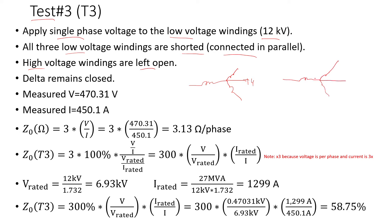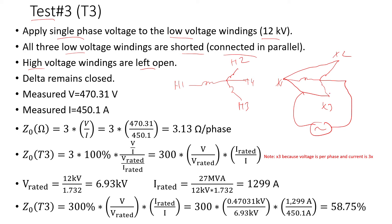This is the high side and this is the low side. I can label the bushings H1, H2, H3, X1, X2, X3. I'm shorting the low voltage windings and applying single-phase voltage at the neutral. I'm leaving the high-side windings open. Since there's no delta, I don't need to worry about that. I measure 470.31 volts and 450.1 amps.